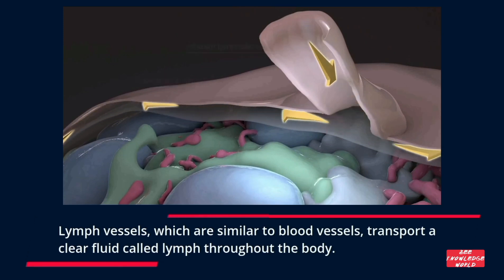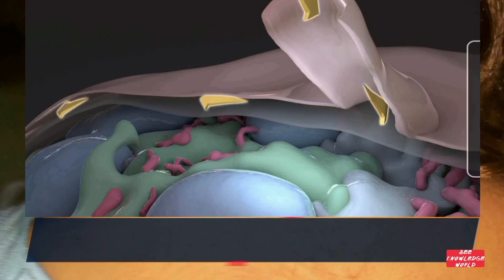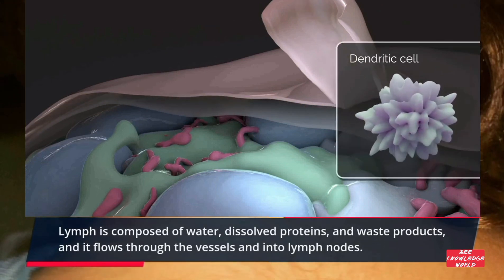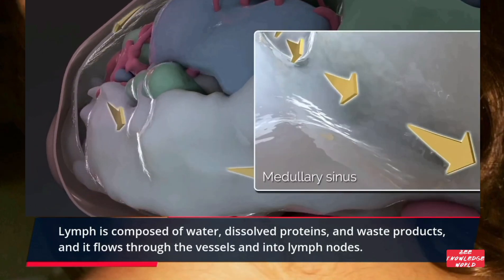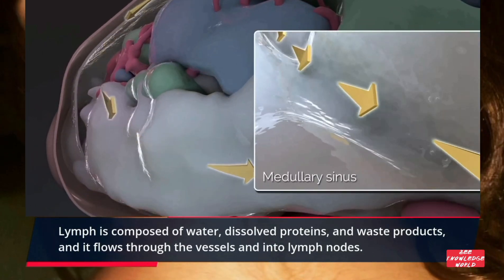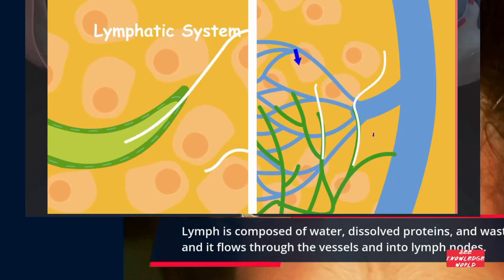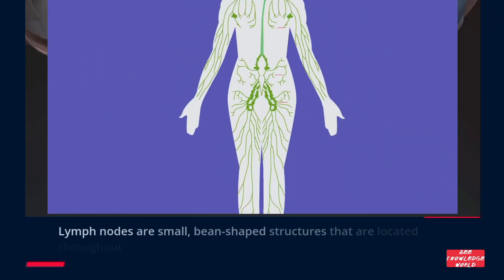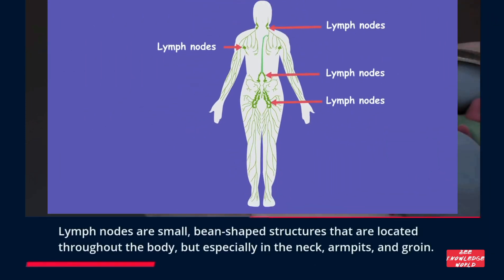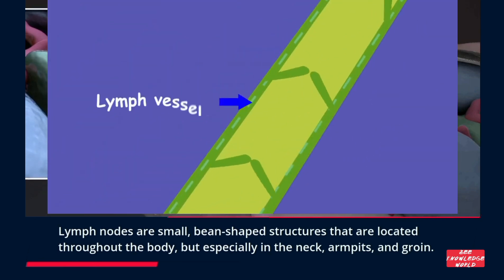Lymph vessels, which are similar to blood vessels, transport a clear fluid called lymph throughout the body. Lymph is composed of water, dissolved proteins, and waste products, and it flows through the vessels and into lymph nodes.